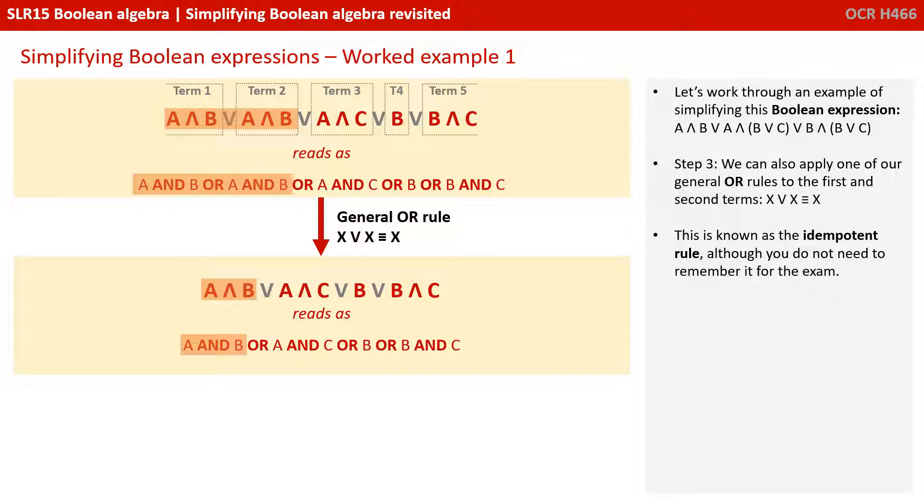We can apply the Idempotent rule again, this time in its OR version. We can see that A and B or A and B can simply be simplified down to A and B.